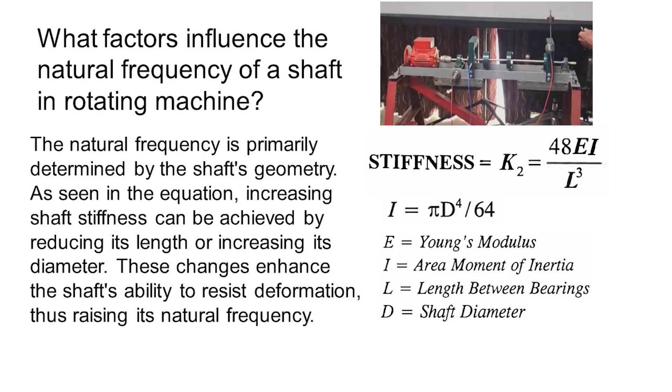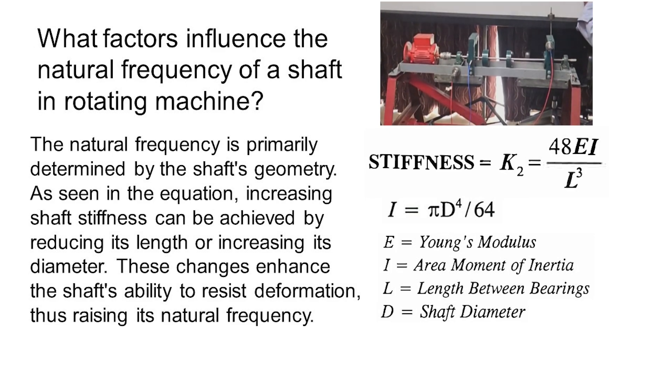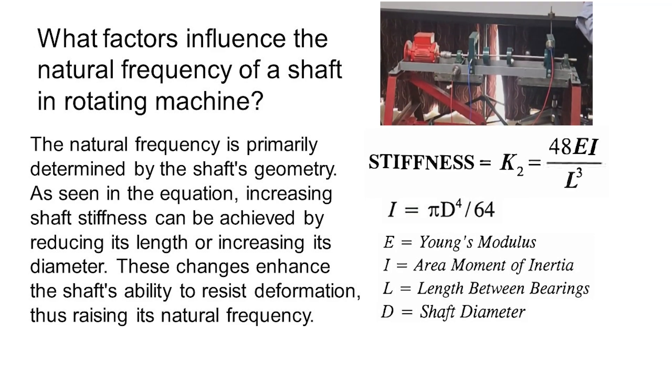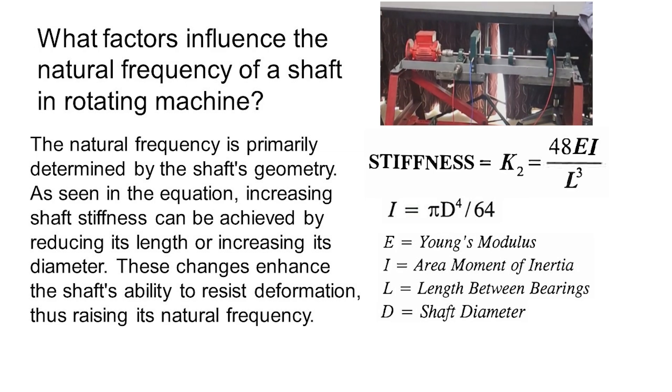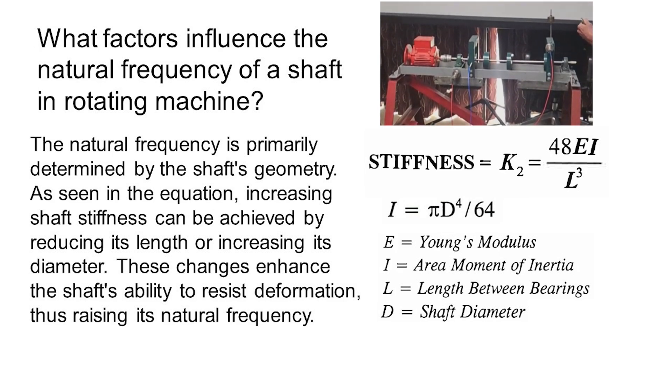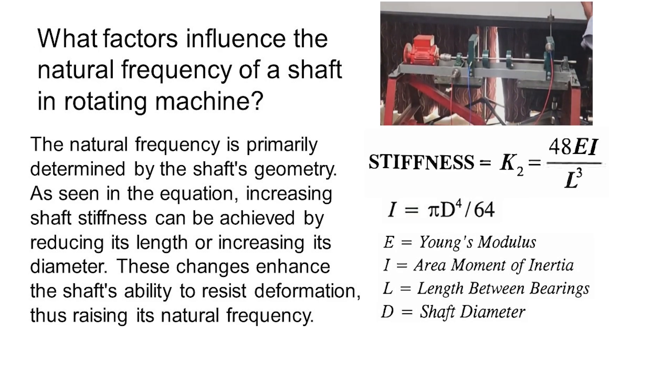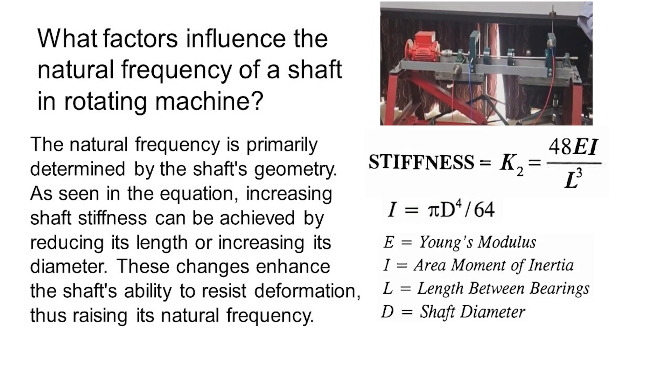So what factors influence the natural frequency of the shaft in rotating machines? The natural frequency is primarily determined by the shaft geometry. As seen in the equation on the right, increasing shaft stiffness can be achieved by reducing its length or increasing its diameter. These changes enhance the shaft's ability to resist deformation, therefore raising its natural frequency.